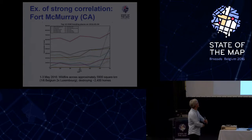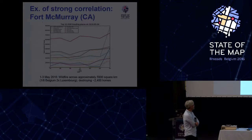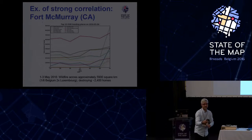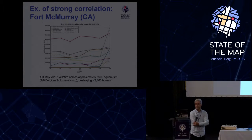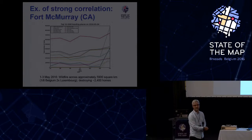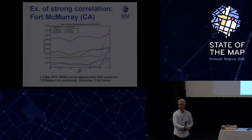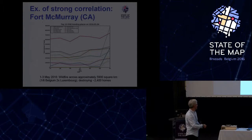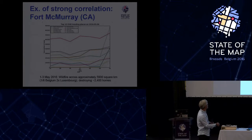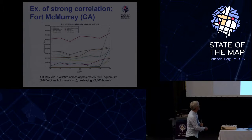I have three examples of successful correlation between the Twitter bot and trending places — two sad ones and one happy news. The sad one is the wildfire in Canada, which reached twice the area of Luxembourg, or one-sixth of Belgium. It happened on the 3rd of May, and it still showed up on the 4th as number three in the graph.